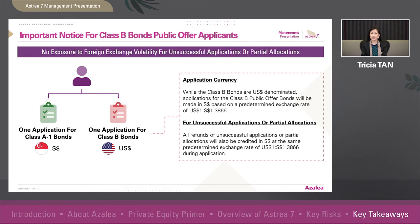While the Class B bonds are US dollar denominated, applications for the Class B bonds will be made in Singapore dollars based on a predetermined exchange rate. Should you be unsuccessful in your application or if you are only partially allocated, all refunds of unsuccessful or partial allocation will be credited back to you in Singapore dollars at the same predetermined exchange rate as application.